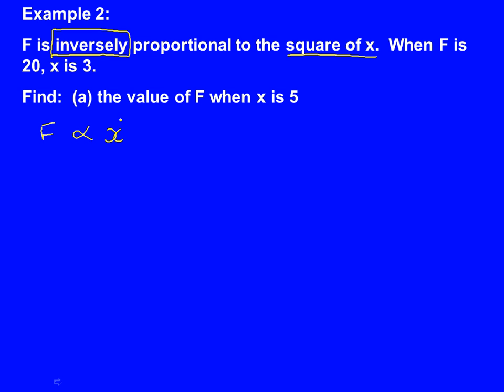So we know usually we'd just write F is proportional to the square of x, where we'd write F is proportional to x squared. But that's wrong, because it's inversely proportional. So this time we're going to write F is proportional to 1 over x squared. It's really important we have that x squared. Never forget the 1 over when it's inversely proportional.